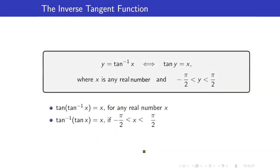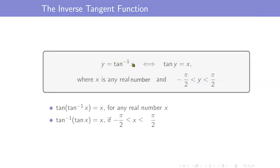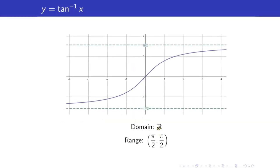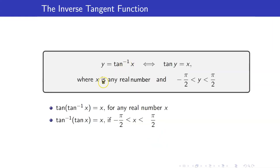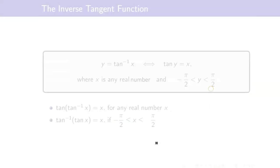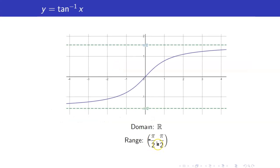This is the definition of the inverse tangent function: y is equal to tangent inverse x if and only if tangent of y is equal to x. The x here is any real number, since the domain is the set of all real numbers, and y lies in the open interval negative pi over 2 to pi over 2, which is the range of tangent inverse.